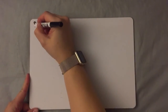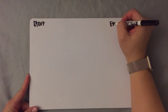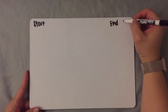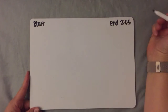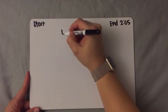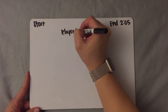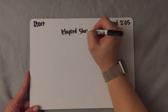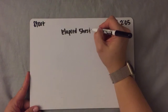When finding the start time, the start time is unknown. You're given the end time, and for this problem it is 2:05, and you're given the elapsed time, which will be five hours and 35 minutes.